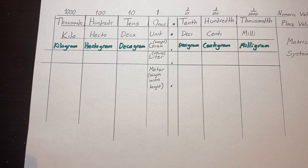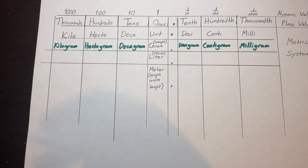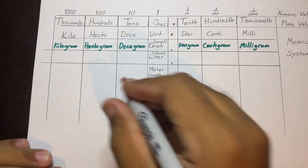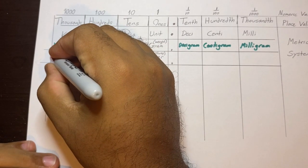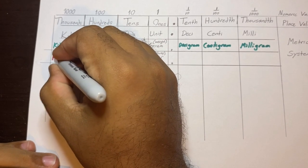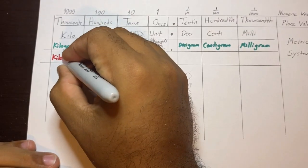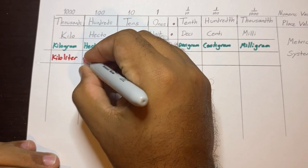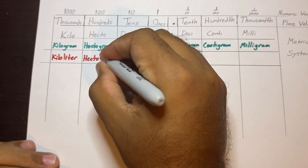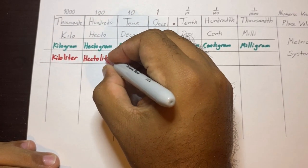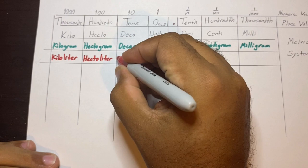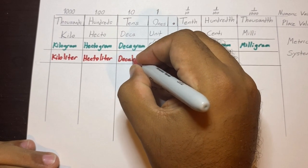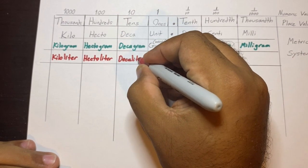Now we'll move on to liters — it's the same process, just a different word. So we have kiloliter, hectaliter, decaliter, and so on down the chart. Each prefix combines with liter the same way it combined with gram.